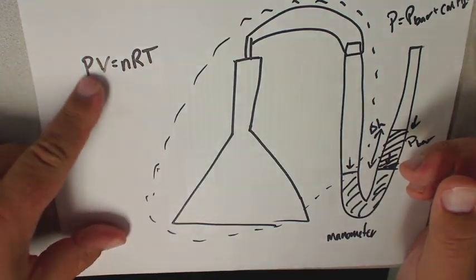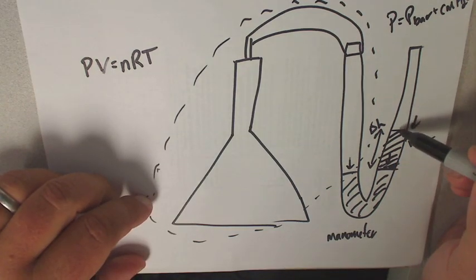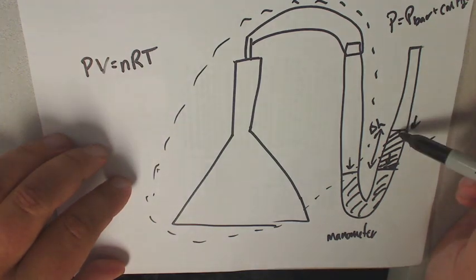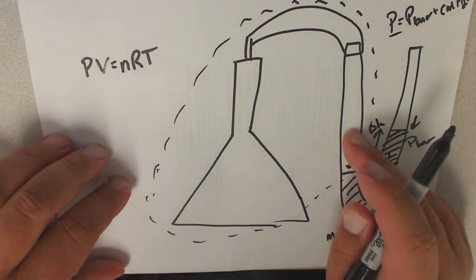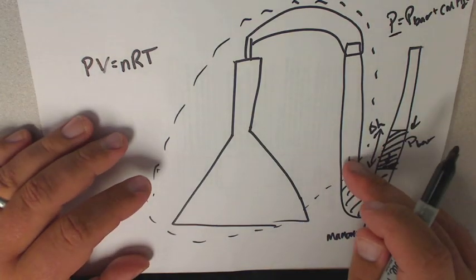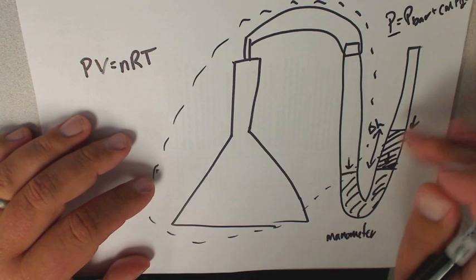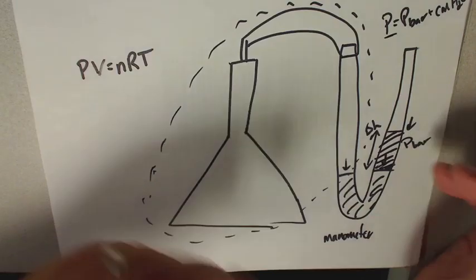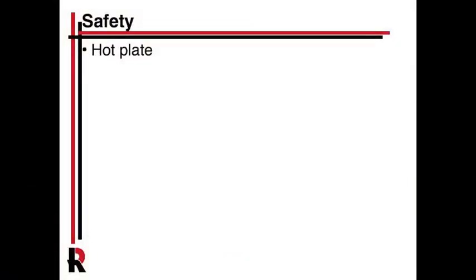In the second experiment, temperature is constant and you're looking at the relationship between pressure and volume. At constant temperature, you add water to the open side, which increases the pressure and shrinks the sealed volume a little bit. You'll be able to measure the difference in height of the water and measure the volume at two different points. In terms of safety, there's not too much to worry about - just make sure you don't burn yourself on the hot plate.